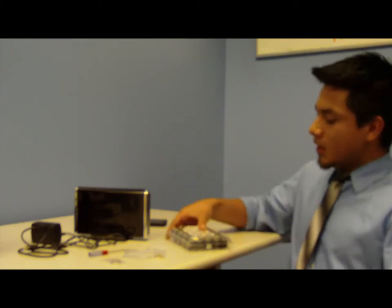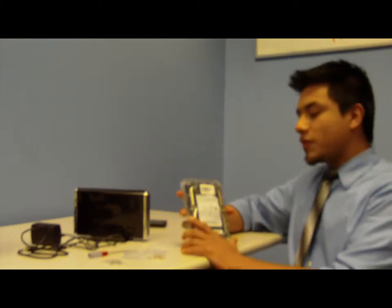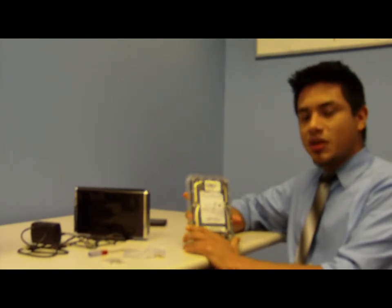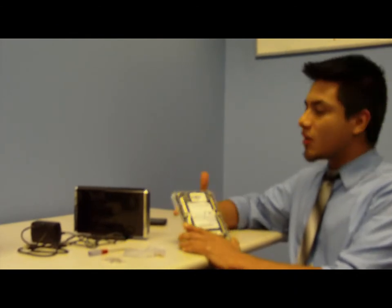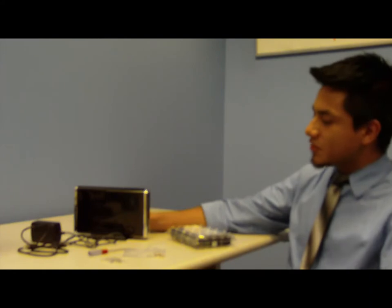We'll first show you all the items that you'll need in order to do this process. This will be the main component. This is the 3.5 inch SATA hard drive that we'll be installing into this 3.5 inch enclosure.